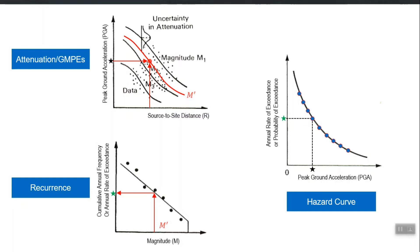For example, the slip rates in faults if they are modeled as a line source, and all other inputs in PSHA — in order to reduce the uncertainty, if we have two options we go for both options and give 50-50 weightage. If we have three options and we are more sure about the middle option, we go for all three options but give more weightage to the second option. So we use a logic tree framework to account for these uncertainties.